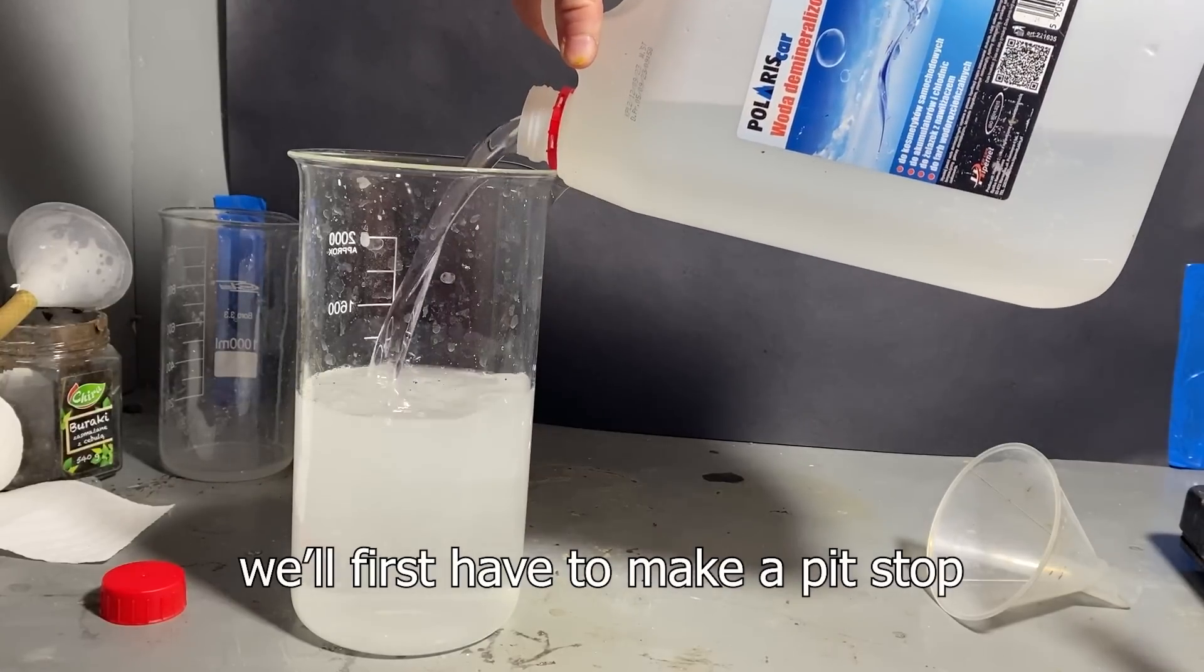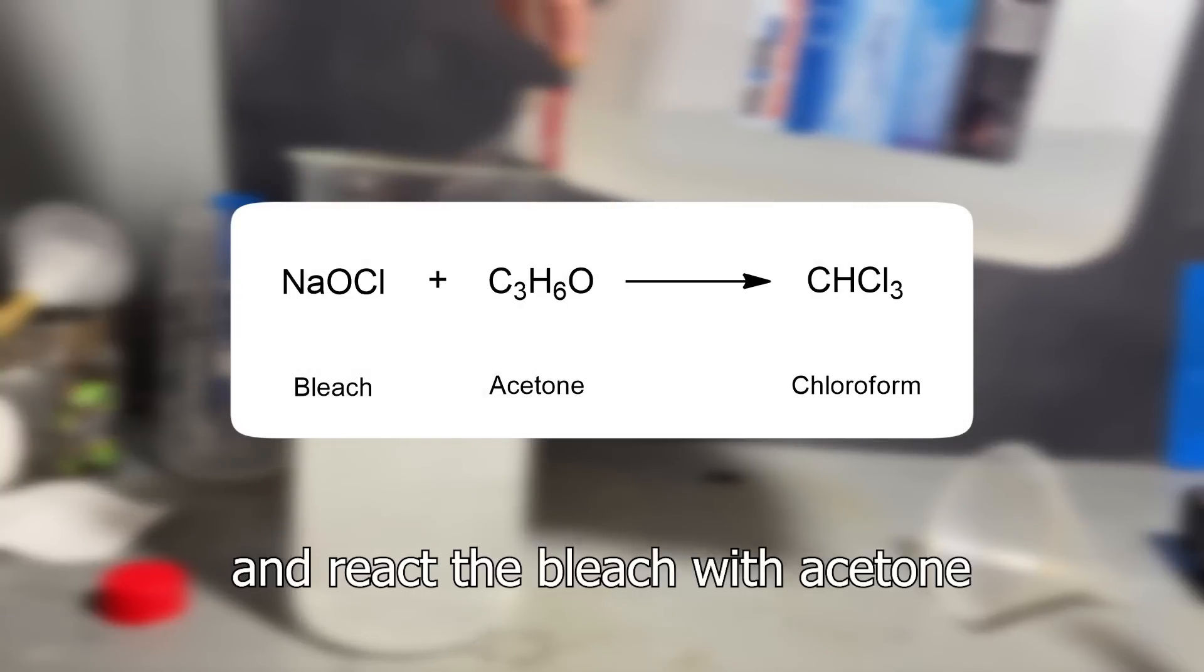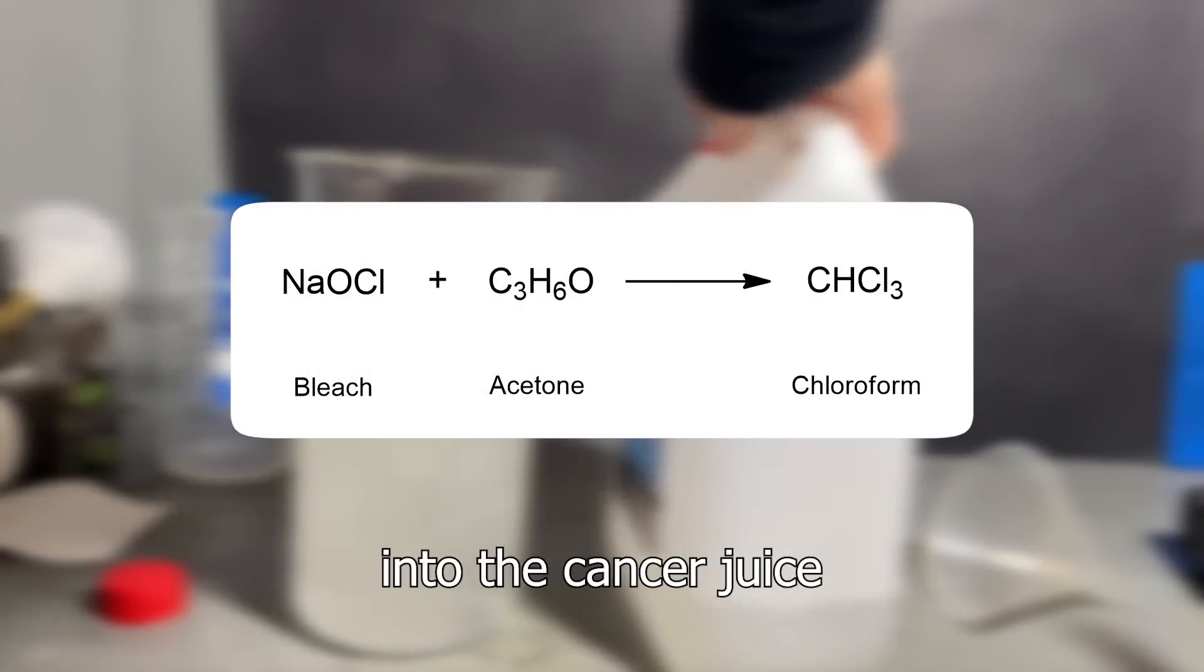To turn bleach into carbon tet, we first have to make a pit stop and react the bleach with acetone to make chloroform, which we can then process further into the cancer juice.